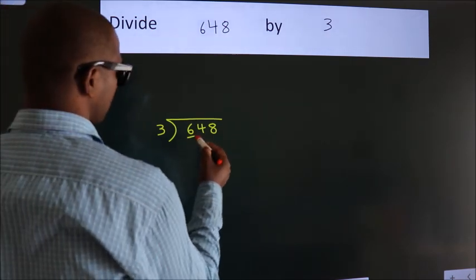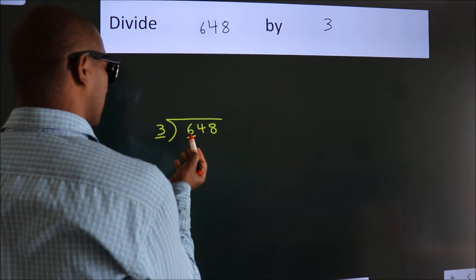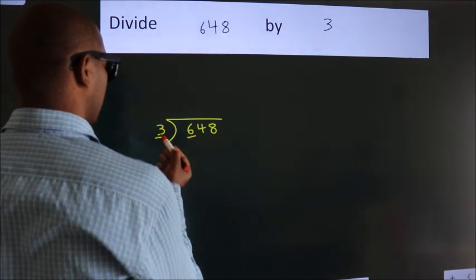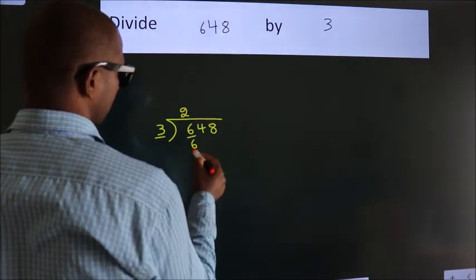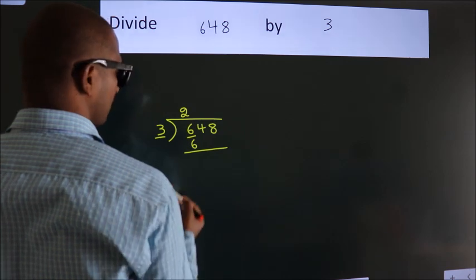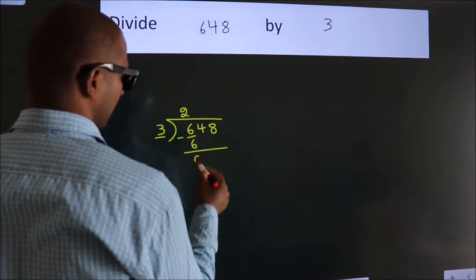here we have 6, here 3. When do we get 6? In 3 table, 3 2s, 6. Now, we should subtract, we get 0.